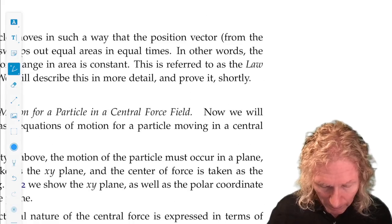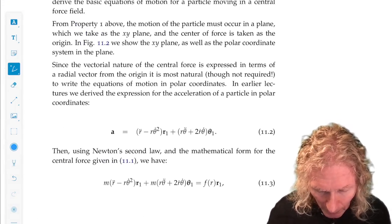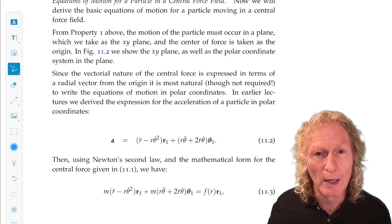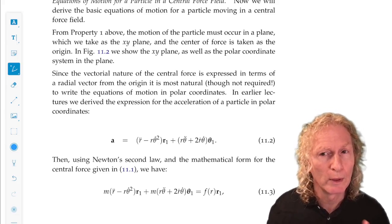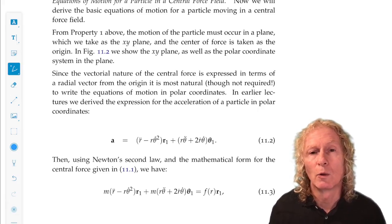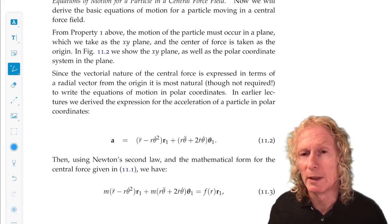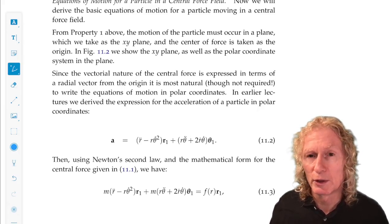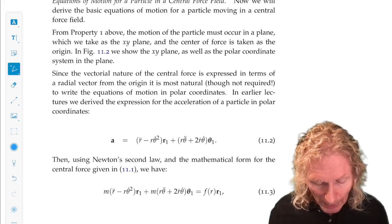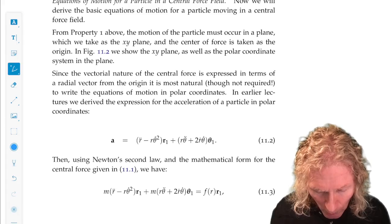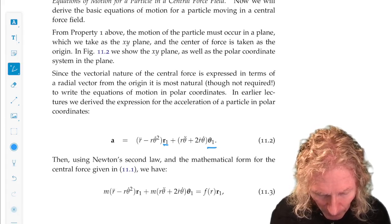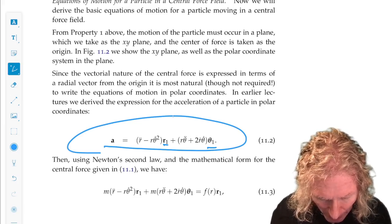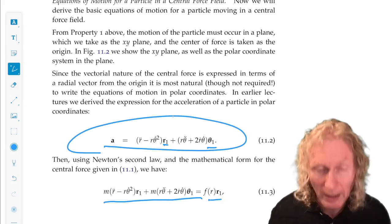So we want to compute F equals ma. So F is the force. We know what the force is. It only has a component in the radial direction, the r direction along the position vector. And in the r₁, θ₁ coordinate system, we've computed the acceleration. So ma equals F.